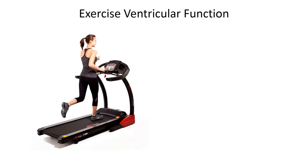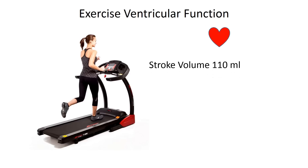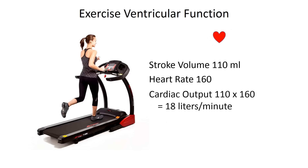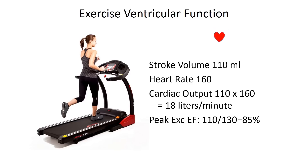See what happens when a normal person exercises. The heart rate goes up and contractility increases. The stroke volume goes up to 110, heart rate to 160, and cardiac output is now 18 to 20 liters a minute. The ejection fraction at peak exercise reaches 85%. This is a normal heart.